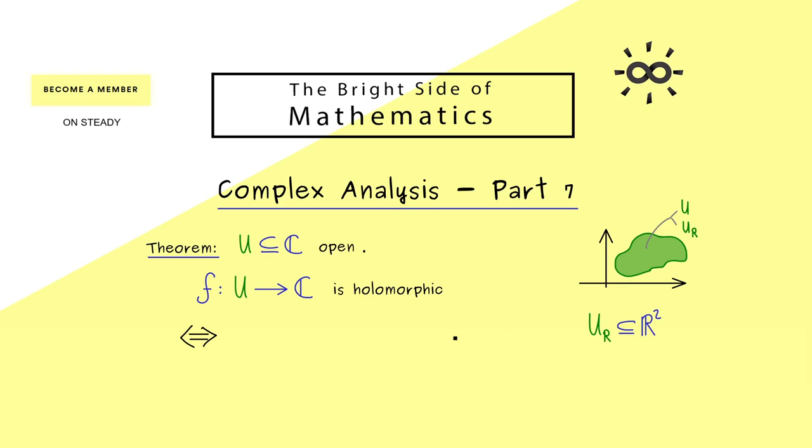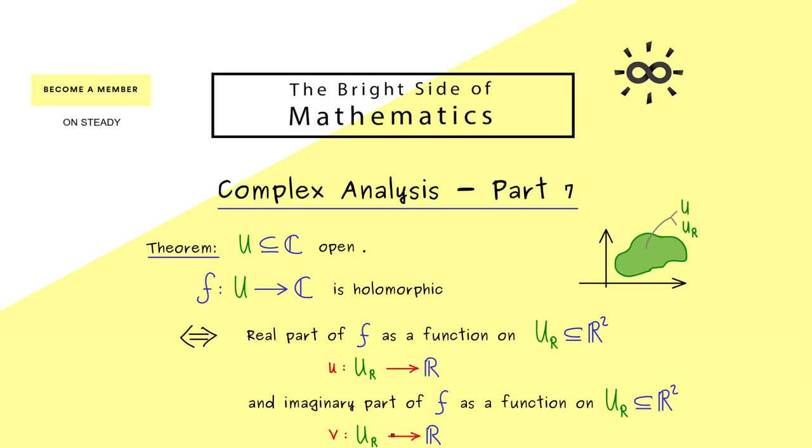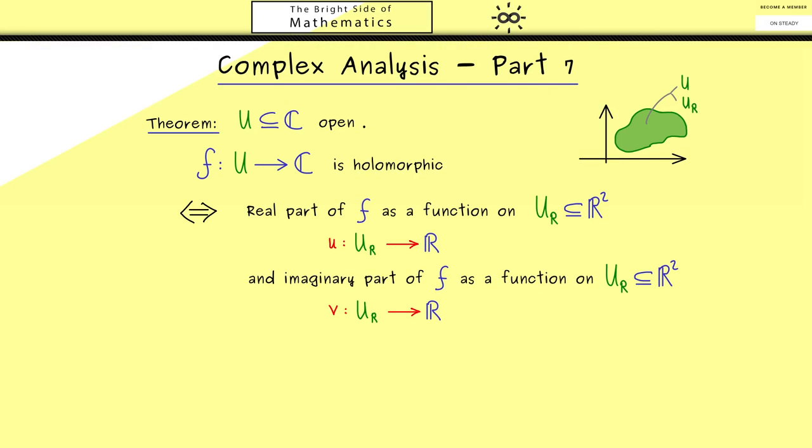Now in the last video we learned that we can split up the function F into a real and an imaginary part. Both we can see as a function from U_ℝ as a subset of ℝ² into ℝ. In particular, the real part function here we denote by lowercase u. So please recall this u is a real-valued function. And then exactly in the same way, the imaginary part of F gives us a function we call v. Hence you see the whole information of the function F is now translated into these two functions.